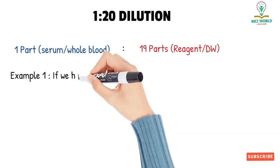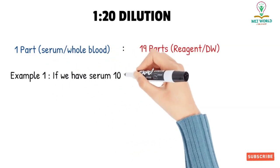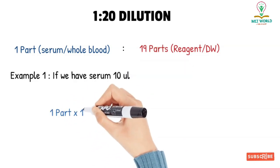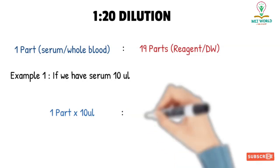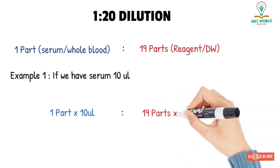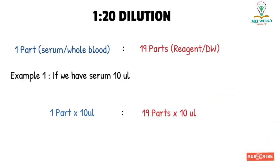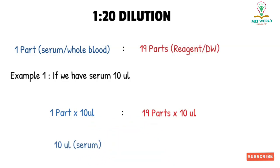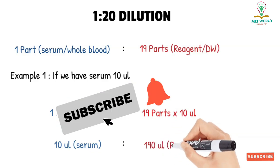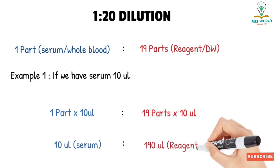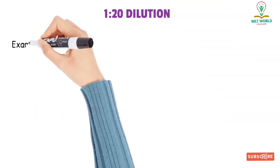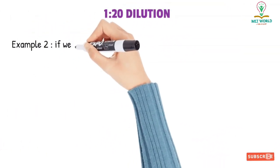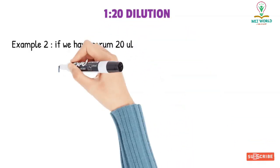For example, if we have 10 microliters of serum — focus on both the unit and the amount. One part multiplied by 10 equals 10 microliters of serum, and 19 parts of reagent means 19 multiplied by 10, which equals 190 microliters. So we take 10 microliters serum and 190 microliters reagent, and our result will be multiplied by 20.